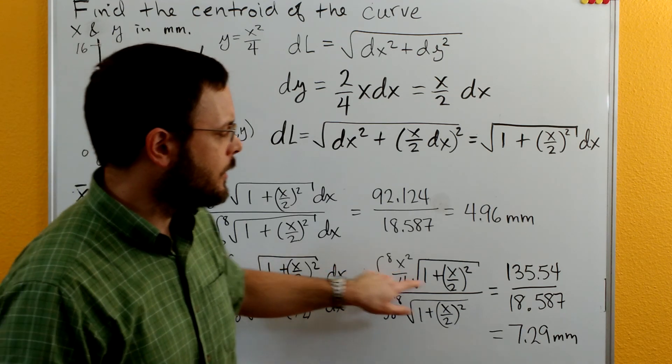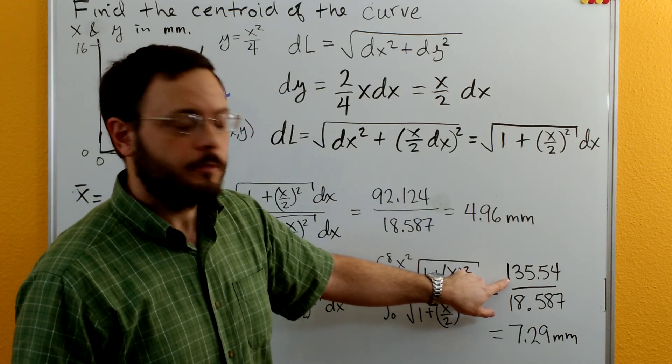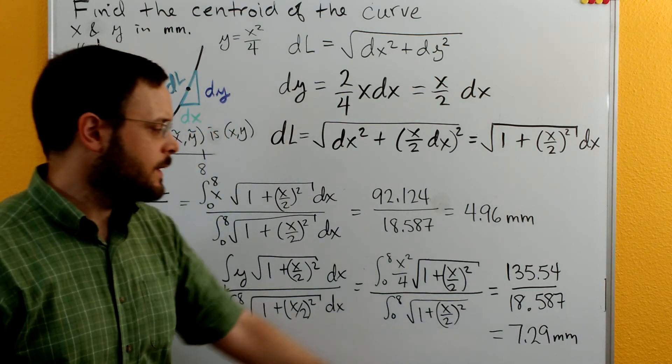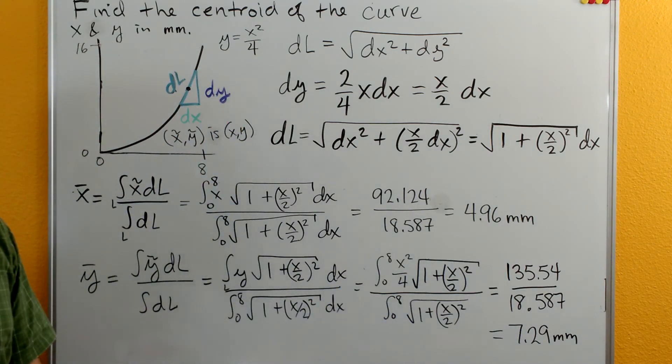Get 135.54 divided by that same 18.587. And that gives you a y centroid of 7.29 millimeters. Thanks for watching.